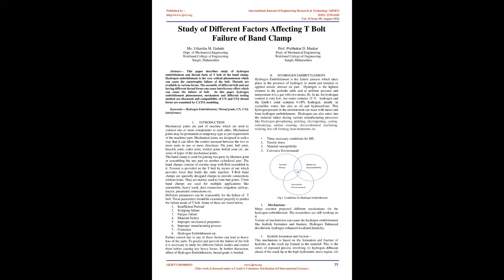Study of Different Factors Affecting T-Bolt Failure of Band Clamp. This paper describes a study of hydrogen embrittlement and thread form of the T-bolt of the band clamp. Hydrogen embrittlement is a very critical phenomenon which can cause catastrophic failure of the bolt. The assembly of different bolt and nut having different thread forms can cause an interference effect which can cause the failure of the bolt. In this paper, hydrogen embrittlement phenomenon, mechanism, and different testing methods are discussed, and compatibility of UN and UNJ thread forms are examined by Kasha Modeling.